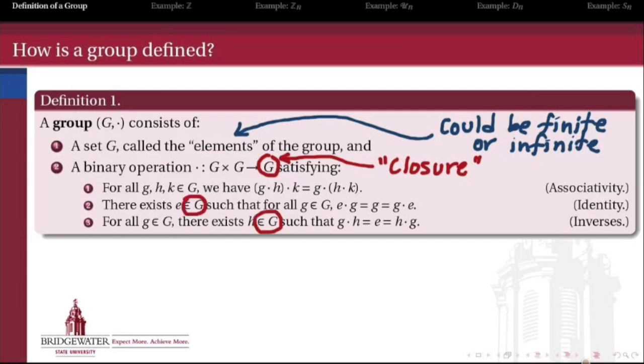This operation also has to have identities and inverses. There has to be an element which, when we operate by it, does nothing—that's the identity. And every element has to have an inverse, such that if I operate on an element with its own inverse, the result is the identity. Most importantly, the identity element and the inverse of each element should be members of the group itself.